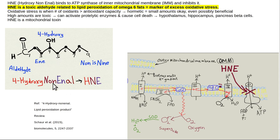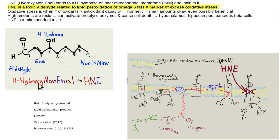To break down the nomenclature: 'non' means nine, so we have nine carbons; 'en' means double bond; 'al' means aldehyde, meaning a carbonyl group attached to a hydrogen. It's called 4-hydroxy because the hydroxyl group is located on carbon number four. That's why it's called 4-hydroxynonenal, abbreviated HNE.